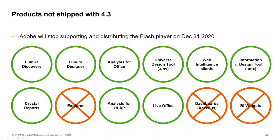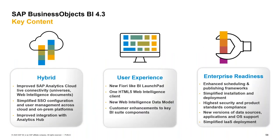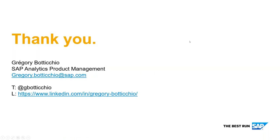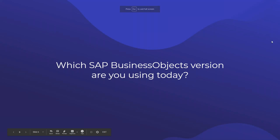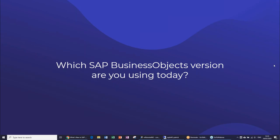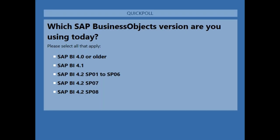Thank you, Gregory. There are tons of questions. Gregory is done with his slides. Patrick reviews questions. A poll asks which SAP Business Objects version attendees are running — after about 30 seconds and over a hundred votes, results show roughly a 50-50 split: about half on BI 4.2 SP1 to SP6, the other half on SP7, with a few experimenting with SP8.